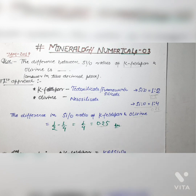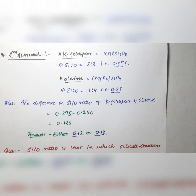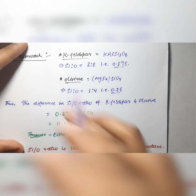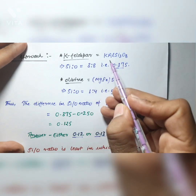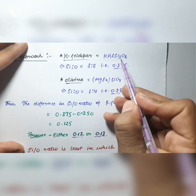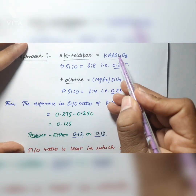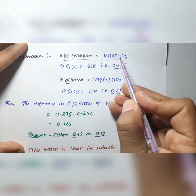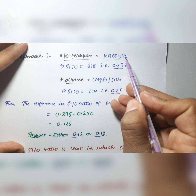The second approach for solving this question is one in which you know the chemical composition of Kefelspar and olivine. In my opinion, this is the best approach because everyone should know exactly the chemical composition of Kefelspar and olivine. The chemical composition of Kefelspar is KAlSi₃O₈. If you look at the Si:O ratio, there are 3 moles of Si and 8 atoms of oxygen.